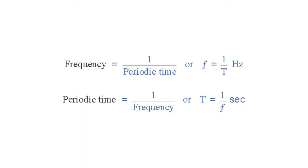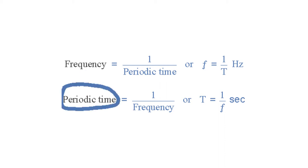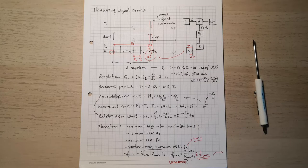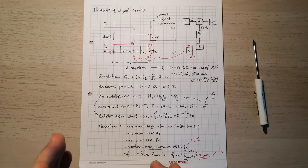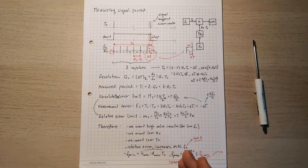Each of these methods provides different advantages and drawbacks. When measuring with one method, the other parameters can be obtained indirectly by inverting the other's value. So for the sake of simplicity and time, I will discuss today how to directly measure period, and in the next video I will show you how to directly measure signal frequency. Now let me show you how we can approach measuring signal period on paper in theory, so we can later implement it on our microcontroller.